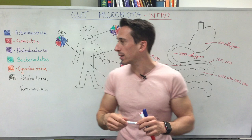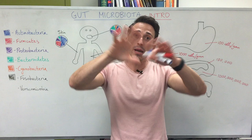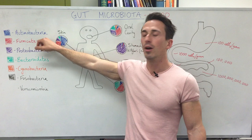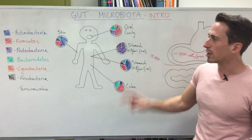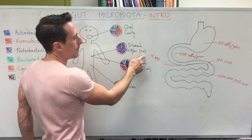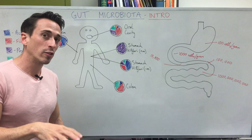The composition of bacteria also changes depending on where you look on the body. On skin, the most common type is actinobacteria, then firmicutes. In the oral cavity, the two most common are firmicutes and proteobacteria. Looking at the stomach, I've drawn two diagrams — one positive for H. pylori (Helicobacter pylori, a species of bacteria) and one negative for Helicobacter pylori.